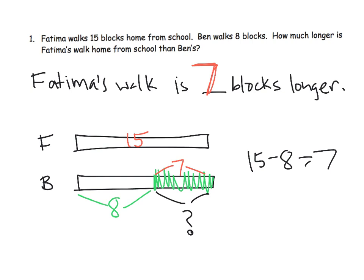Now there's another way we could have done it. We could have represented both bars as an eight and then added on to Fatima's. So there's a variety of different models that would all work. So parents and teachers, don't freak out if some students draw a model looking one way and other students draw it looking totally different. The idea is: does the picture, as different as it may be, accurately reflect the problem? If the answer is yes, rock on.